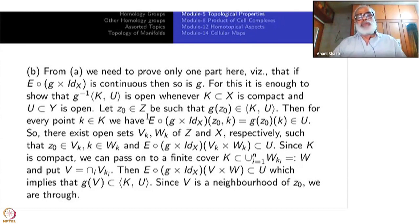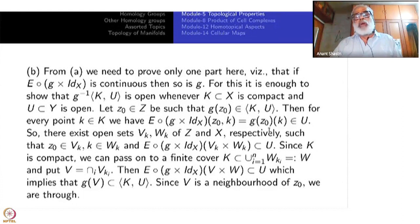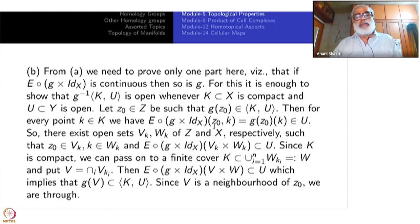Take z₀ belonging to Z such that G(z₀) belongs to [K, U]. Then for every point k in K, we have E composed with (G cross identity) of (z₀, k), which goes to (G(z₀), k), which goes to G(z₀)(k) — that will be inside U. So by continuity of the composite, there exist open sets V_k and W_k of Z and X respectively such that z₀ is inside V_k, little k is inside W_k, and E of (G cross identity) of V_k cross W_k is contained inside U.